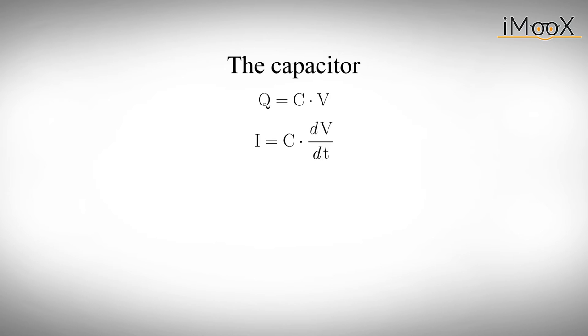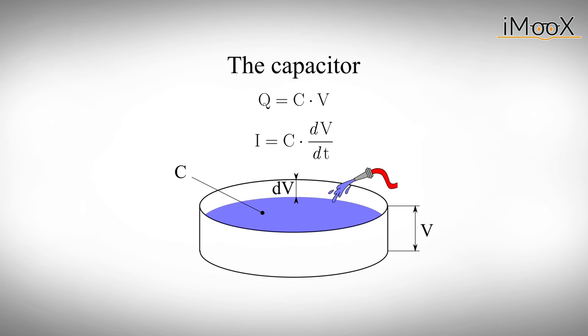One way to think of this equation is to imagine the capacitor as a water tank with area C and height V. The volume Q of the water is simply C times V. If you fill the tank with a big hose or in other words a big current I, the water level V will rise quickly. If you fill it with a little straw or a small I, the water level will rise slowly. A big tank with large area C will take of course longer to fill than a small tank.